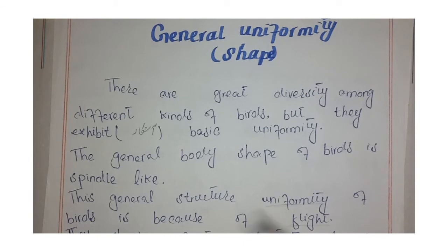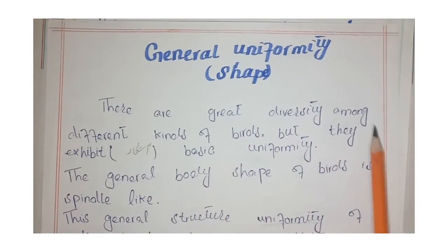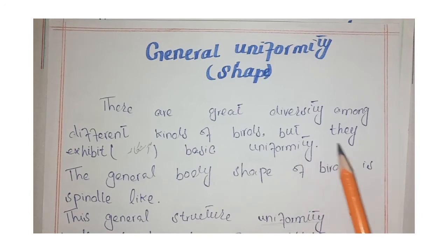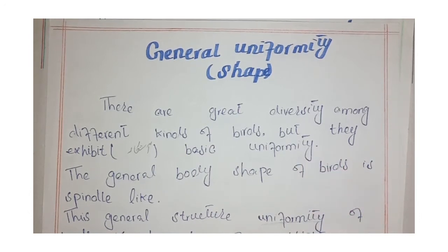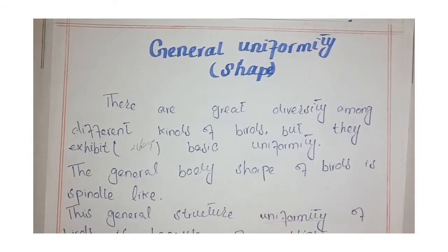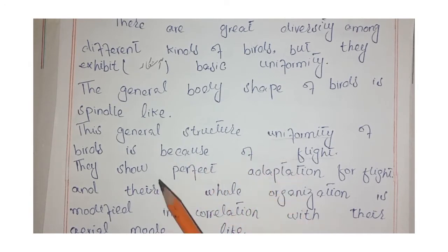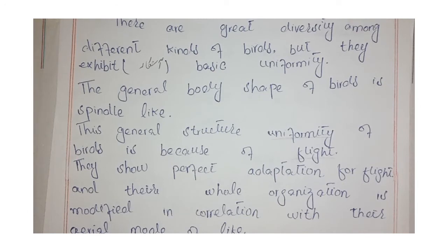This is the general uniformity or shape of birds. There is great diversity among different kinds of birds, but they exhibit basic uniformity. The general body shape of birds is spindle-like, which is a perfect adaptation for flight.